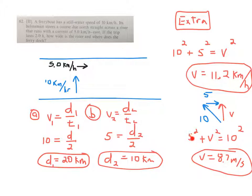In that case, you would have 5 squared plus V squared equals 10 squared. Then the progress across the river would have been 8.7 meters per second. You could figure out how long it would have taken them if the distance across the river was 20 km.